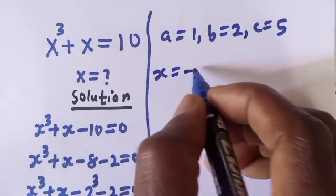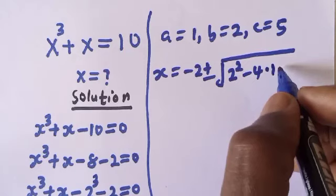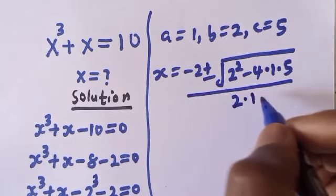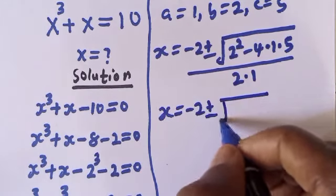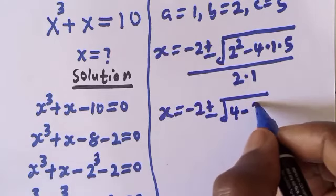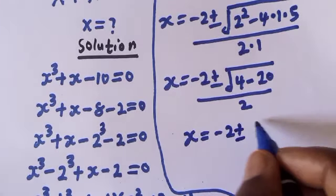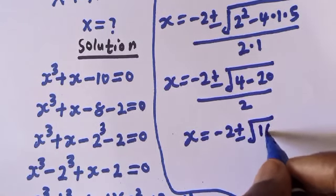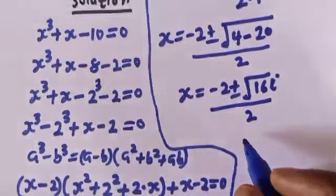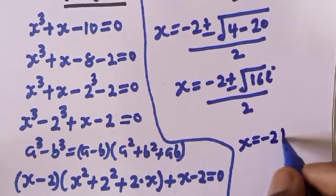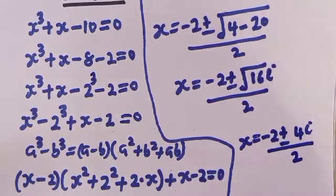Then we have s is equal to minus 2 plus or minus square root of 2 squared minus 4 multiplied by 1 multiplied by 5, over 2 multiplied by 1. This gives s is equal to minus 2 plus or minus square root of 4 minus 20 over 2, which is minus 2 plus or minus square root of negative 16, giving 4i over 2.